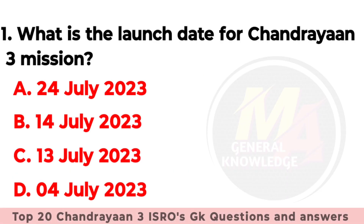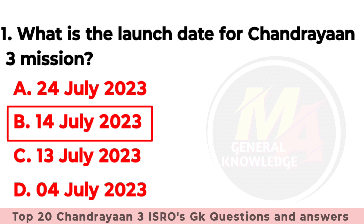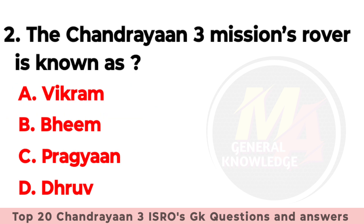Question number one: What is the launch date of Chandrayaan-3 mission? Option A: 24 July, Option B: 14 July, Option C: 13 July, Option D: 4 July. The right option is option number B — 14 July 2023.